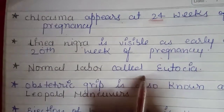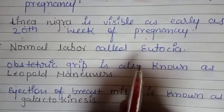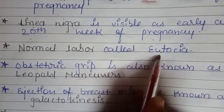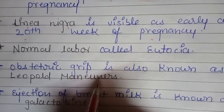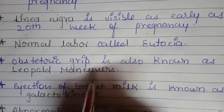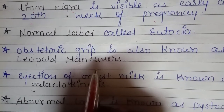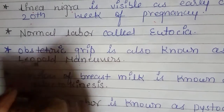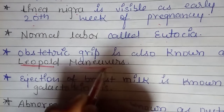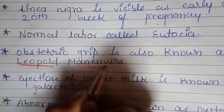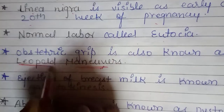Normal labor is called eutocia. If a lady has normal labor, we call it eutocia. Obstetric grips are also known as Leopold's maneuvers — including pelvic grip and lateral grip. Leopold was the scientist who first identified these grips, so the obstetric grips are named Leopold's maneuvers after him.